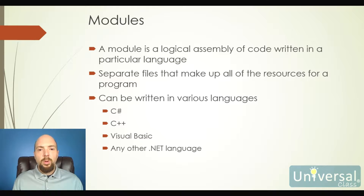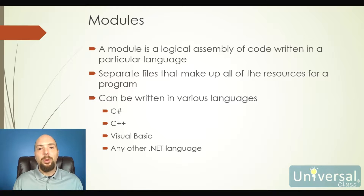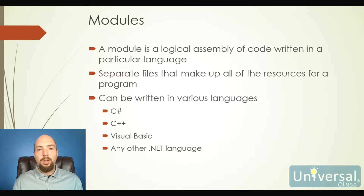In C#, all of the stuff that we do is written in what are called modules. A module is nothing more than an assembly of code written in a particular language — different types of files making up our program. I can write my modules in C#, C++, Visual Basic, or any other language supported by the .NET Framework, and they can all interact with each other because they are all .NET Framework applications.